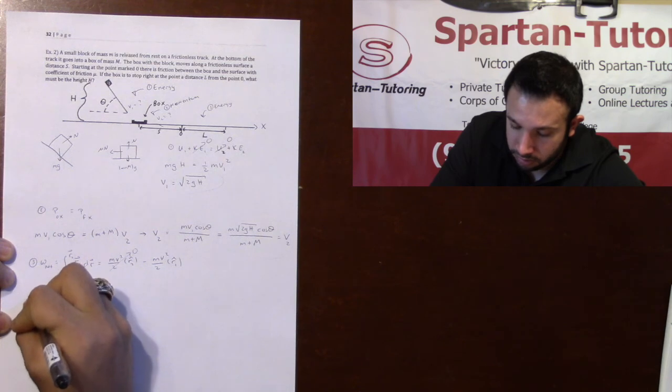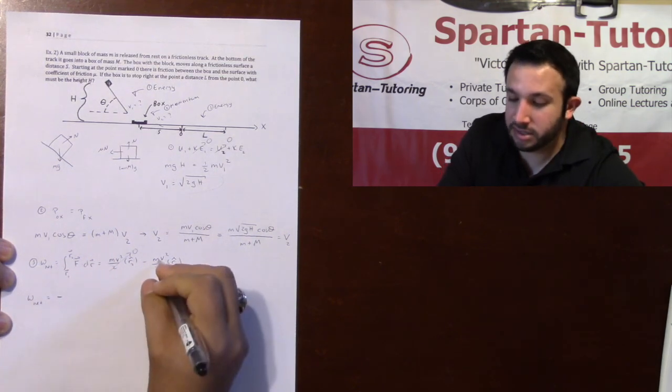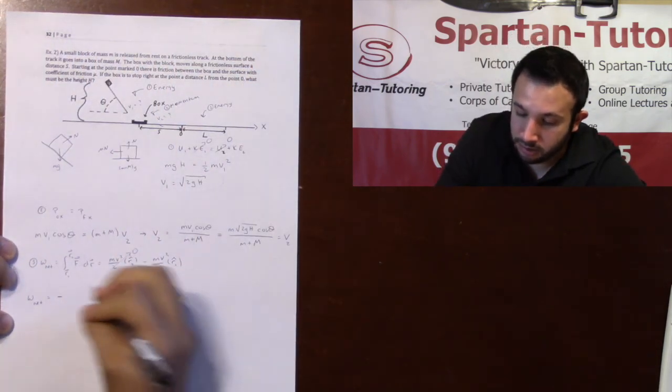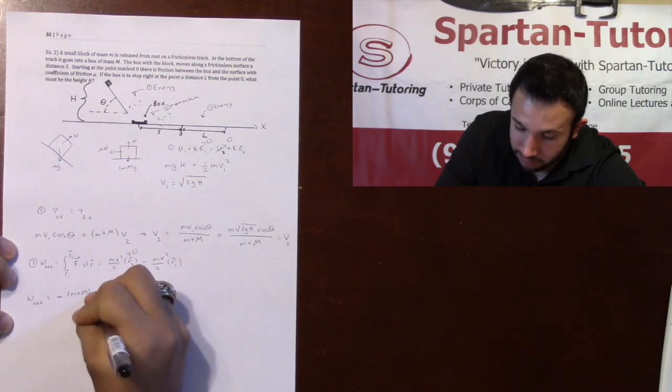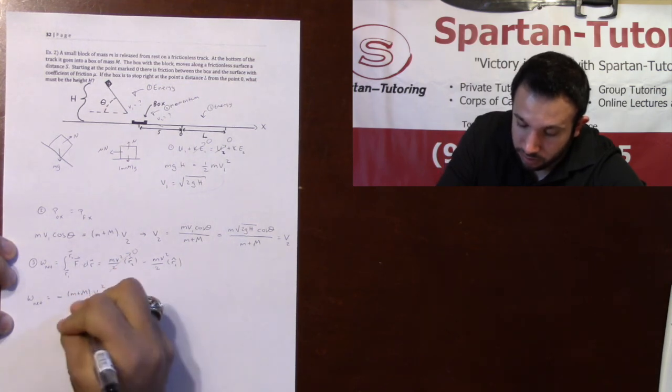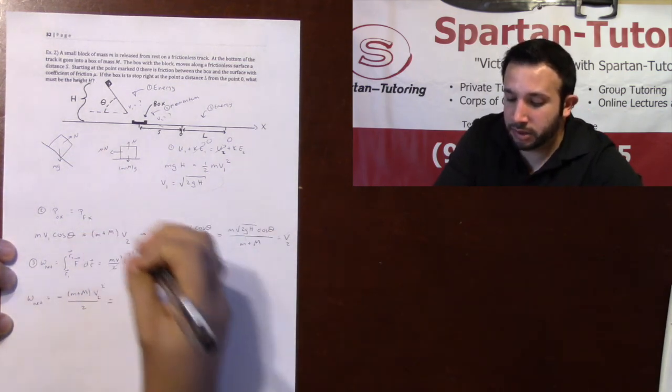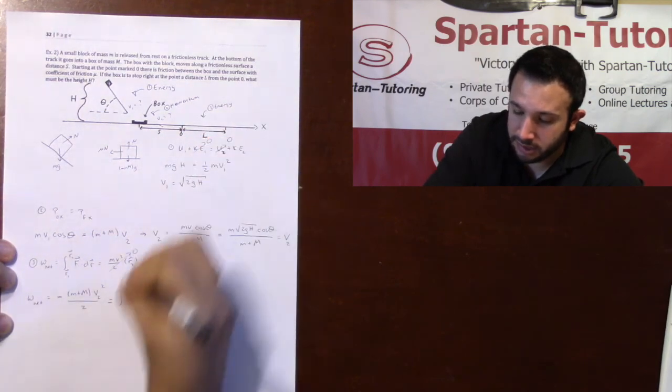And so your network, which is equal to a negative. Now this mass is the combined masses, because the combined masses are moving together. So it will be a negative M plus capital M V2 squared over 2, where V2 was the final velocity of momentum, is equal to the integral. And I'm going to go from 0 to L.